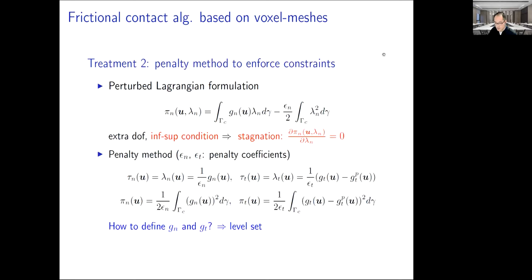We also adopt the penalty method to enforce constraints rather than Lagrangian multiplier method. For Lagrangian multiplier method, we would introduce extra degrees of freedom. Therefore, we have to use different spatial discretization orders to satisfy the inf-sup condition, which complicates the problem.